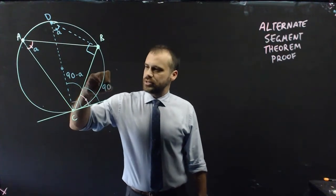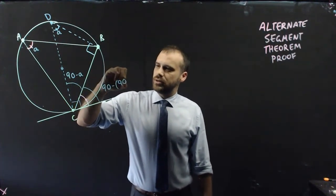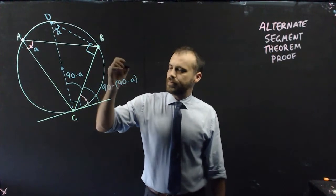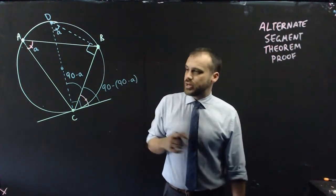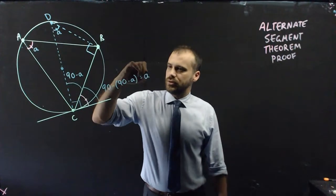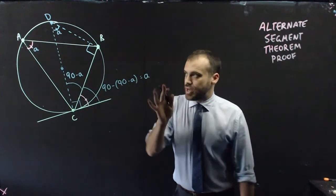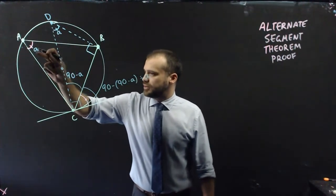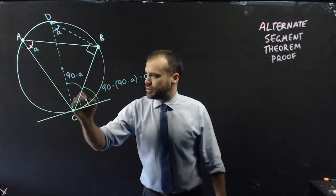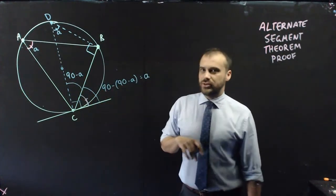In other words, 90 minus 90 minus A. And 90 minus 90 minus A is equal to A. And we have therefore proven that that angle is equal to that angle right there.